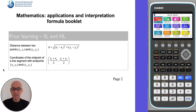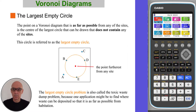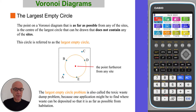The formula for the distance between two points is given on page two of your formula booklet. The point on a Voronoi diagram that is as far as possible from any of the sites is the centre of the largest circle that can be drawn that does not contain any of the sites. This circle is referred to as the largest empty circle. The largest empty circle problem is also called the toxic waste dump problem, because one application might be to find where waste can be deposited so that it is as far as possible from habitation.